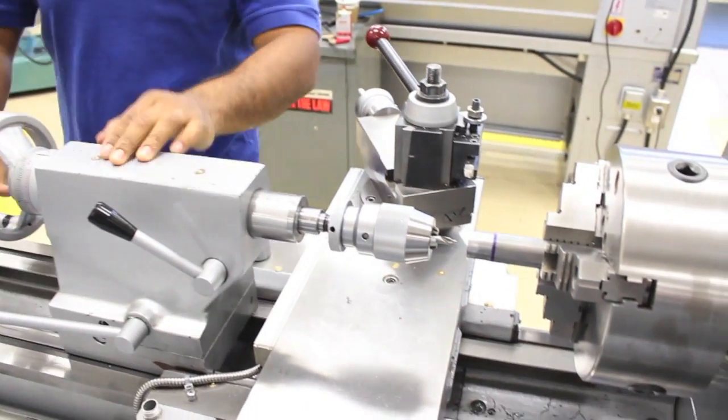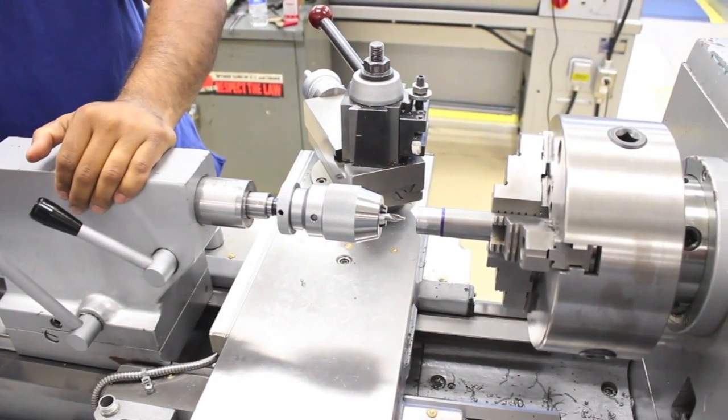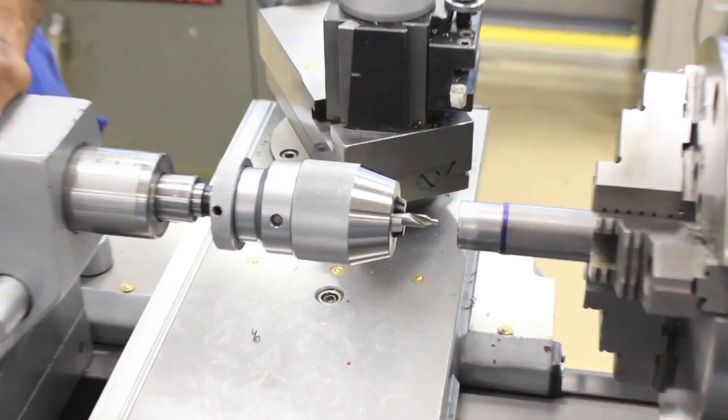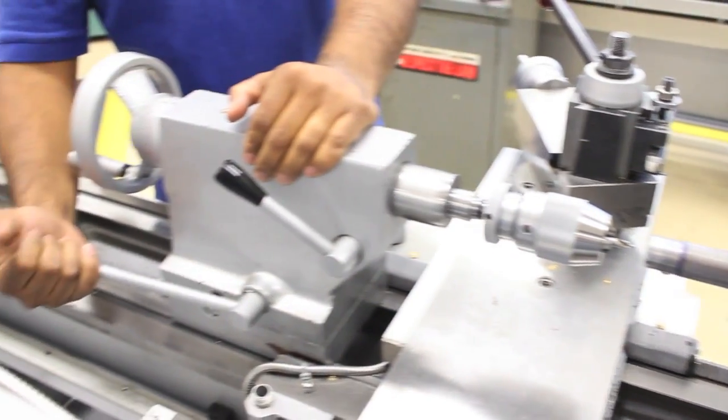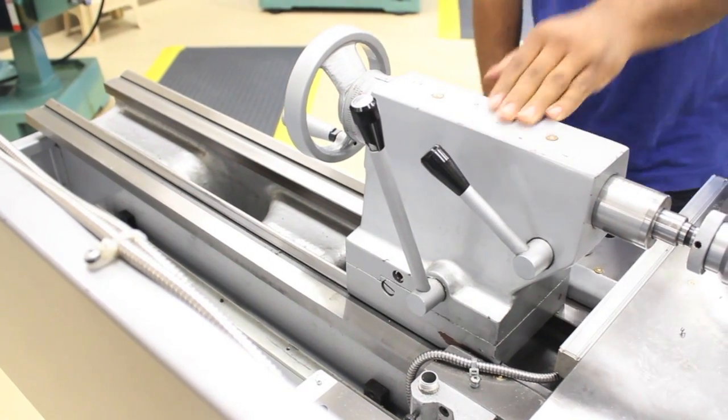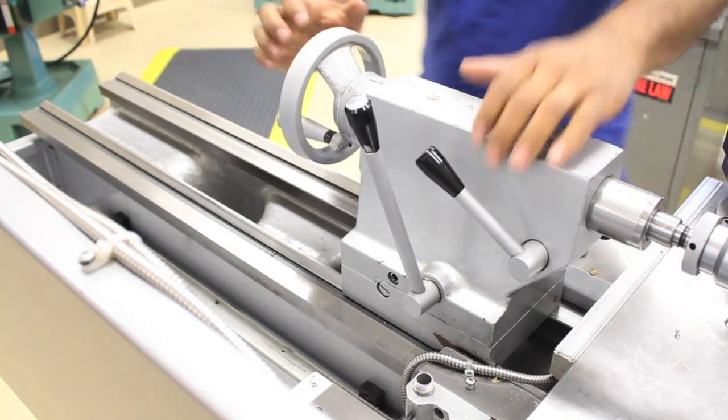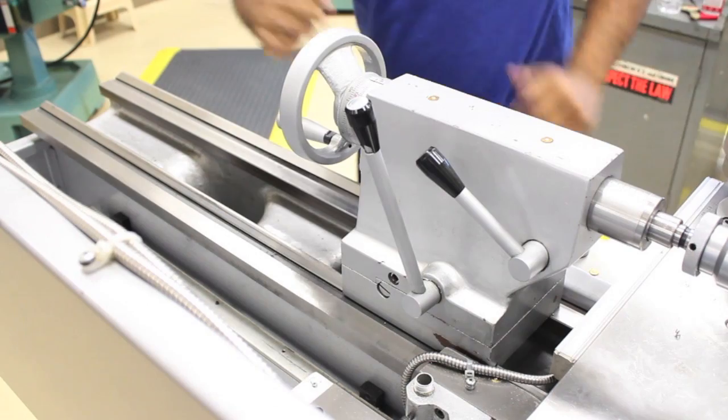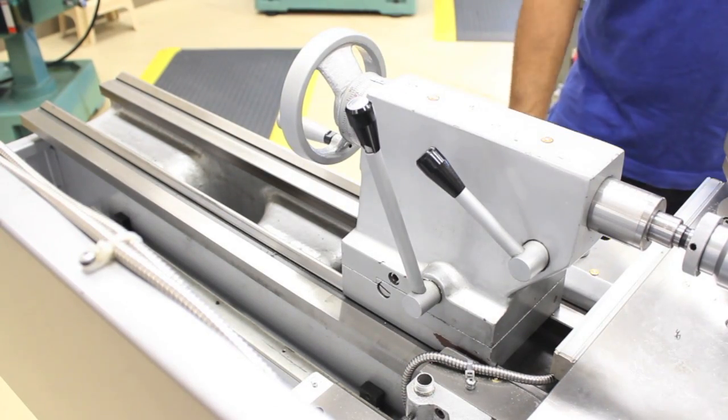Once setup is complete and your workpiece is secure, slide the tail stock into position that allows the ram to travel and lock the tail stock down. Engage the lathe spindle in a counterclockwise position at the correct RPM and begin turning the hand wheel of the tail stock to peck at the workpiece.